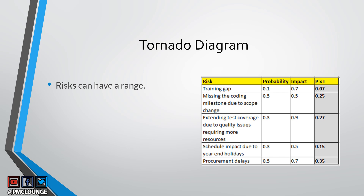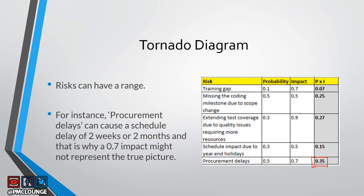The fact is, risks need not always have absolute values — risks can actually have a range. While procurement delay shows a P times I value of 0.35, there is a possibility that it could cause a delay of two weeks or it could cause a delay of two months. So this impact of 0.7 is actually an incomplete picture, because the true picture could be a range — from two weeks to two months. This is where you enter the tornado diagram.